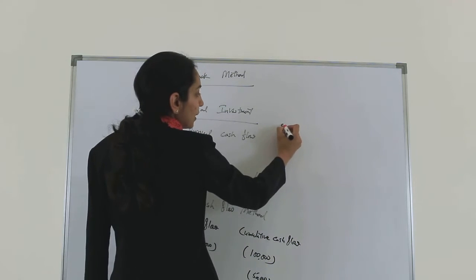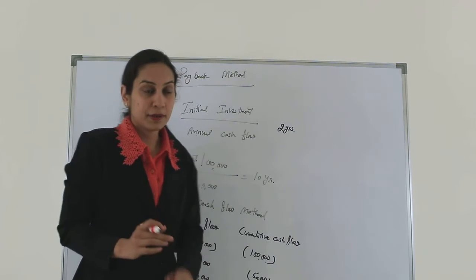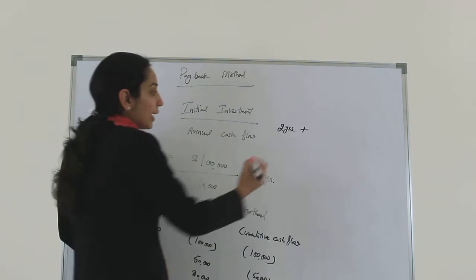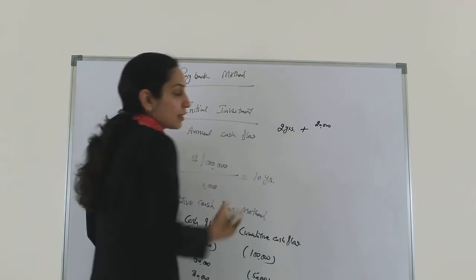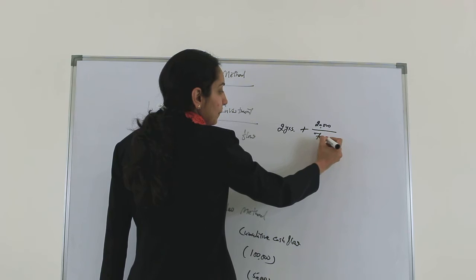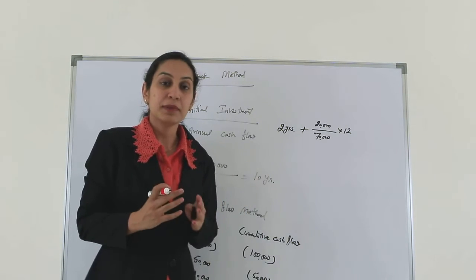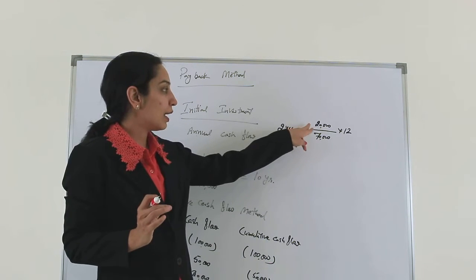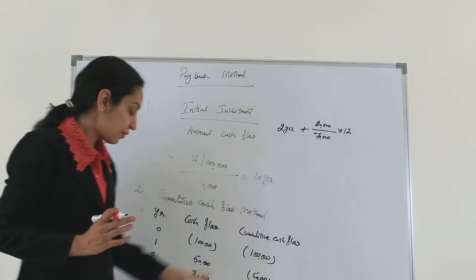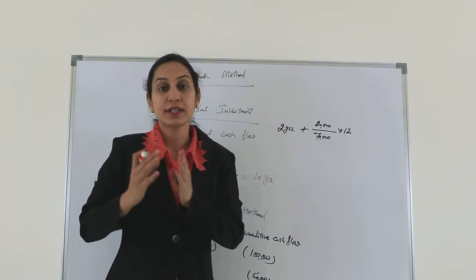Now let's calculate exactly when the money was recovered. The company actually completed two full years, since the cash flow was negative until year two — so two years is the minimum payback period. Then we calculate the months: we take the last negative figure, which was $20,000, divide by the next positive cash flow of $70,000, and multiply by 12 months. This gives the exact number of additional months, so the payback period is two years plus those months.